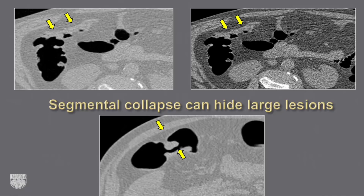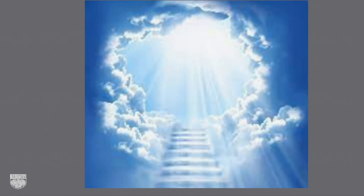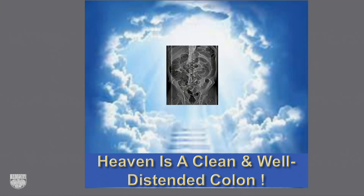When you have a collapsed area, if you have a center line and can fly through, the case may still be readable. But a collapsed segment can hide a large lesion — here a circumferential mass is completely hidden, and changing window settings doesn't help. You may need to qualify: if it's the recto-sigmoid or sigmoid, maybe a flexible sigmoidoscope could evaluate it. Otherwise, you'll need colonoscopy or a repeat exam. In virtual colonoscopy, heaven is a clean and well-distended colon.